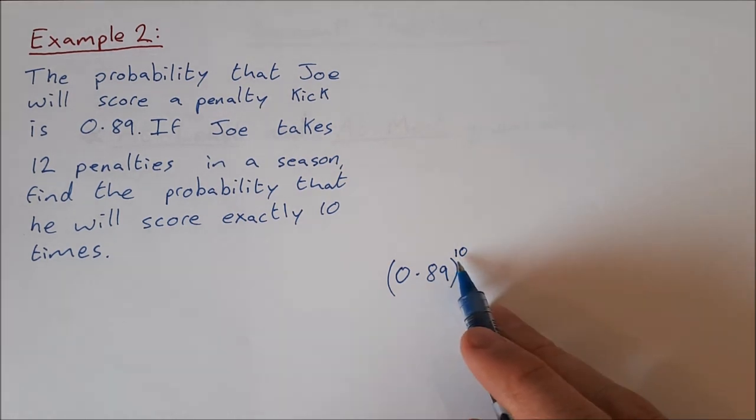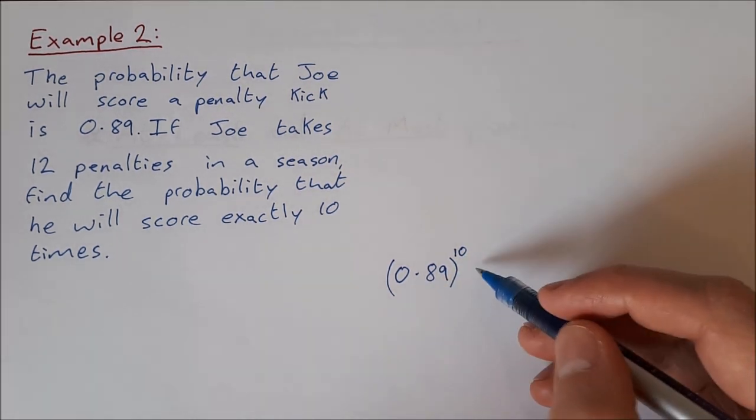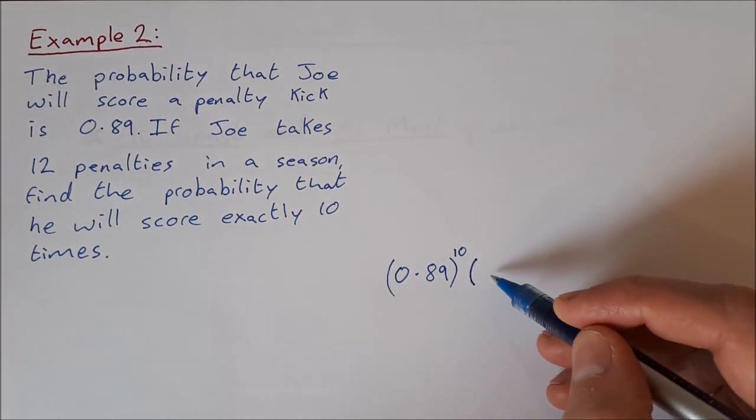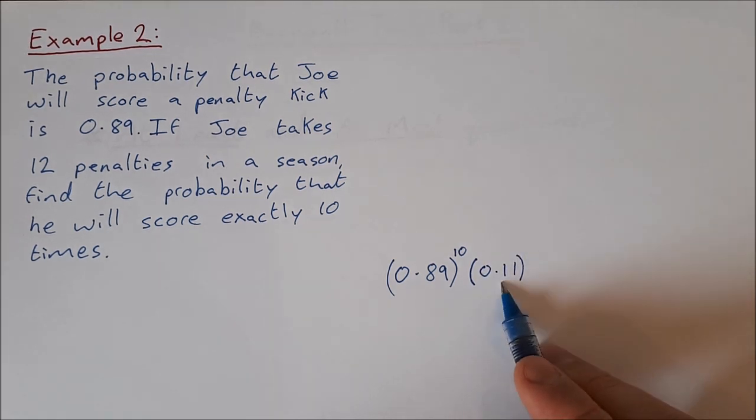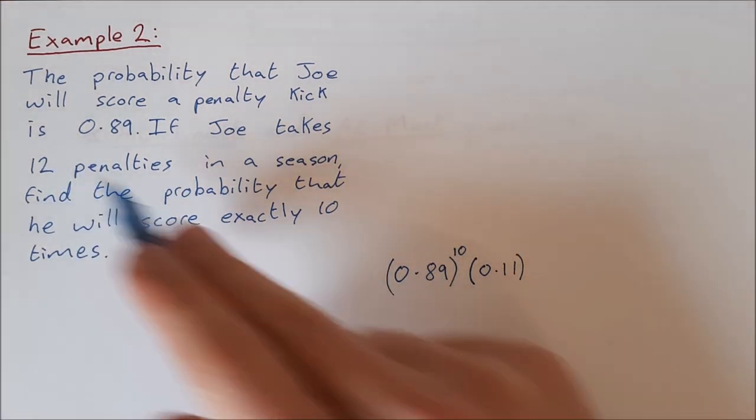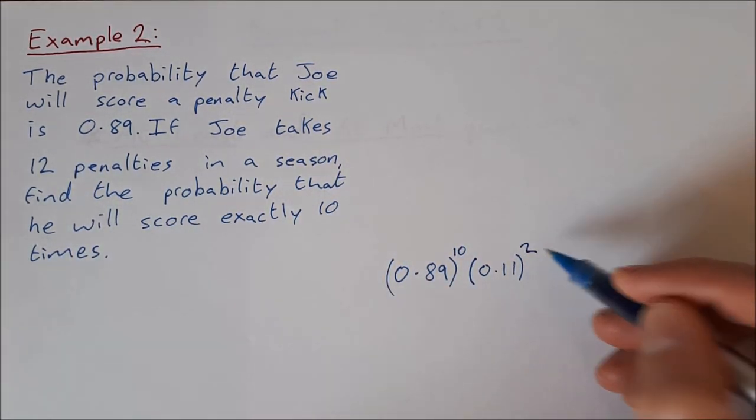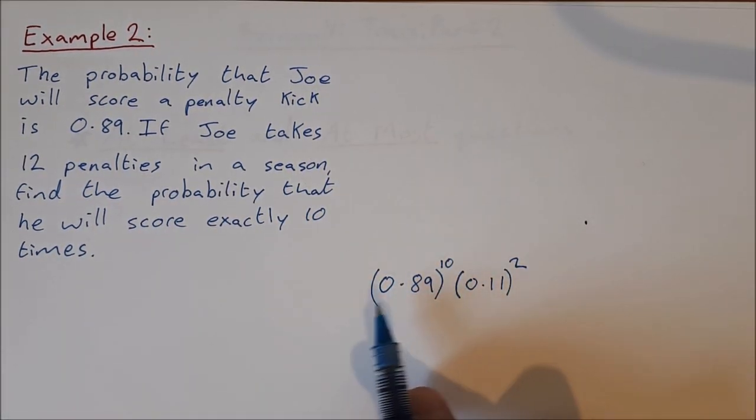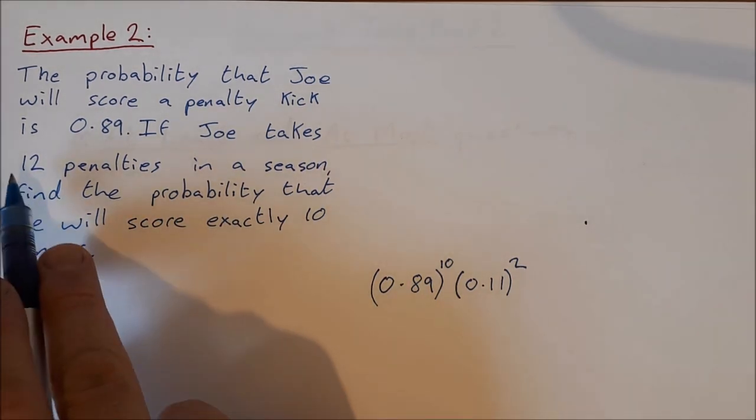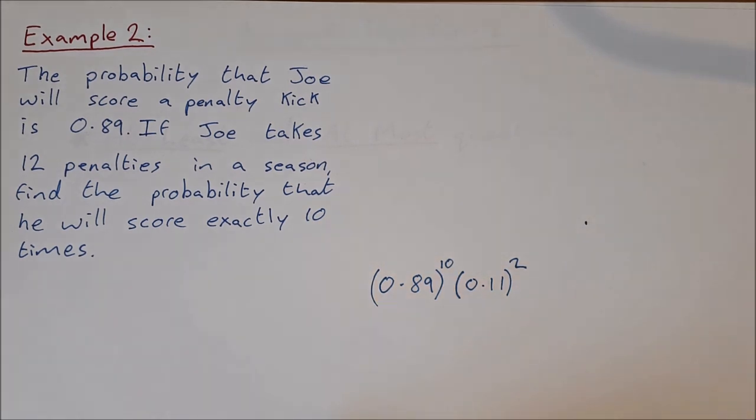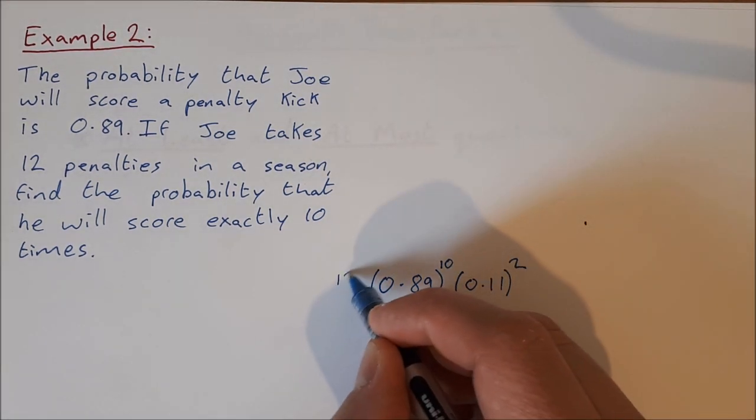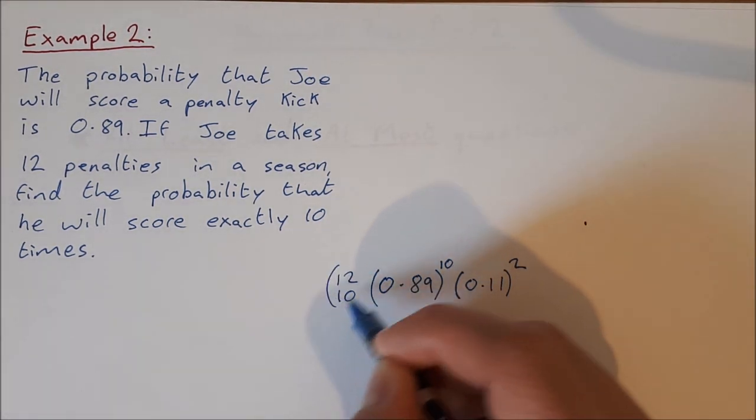Now, if he scores 10 times, then he has to miss as well. So what's the probability of him missing? 0.11. How many times do we want him to miss? We want him to miss 12 take away 10, which is 2. And how many ways can this happen? Well, he's taken 12 penalties. He's scoring exactly 10 times. So that is 12 choose 10 ways.